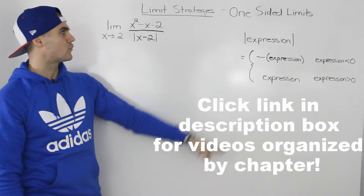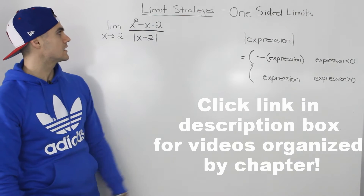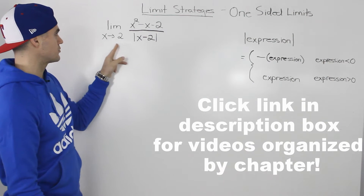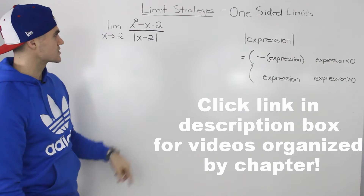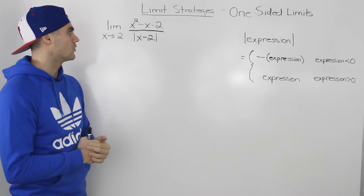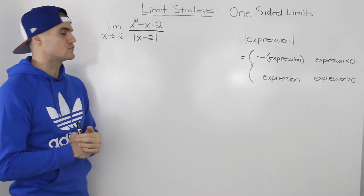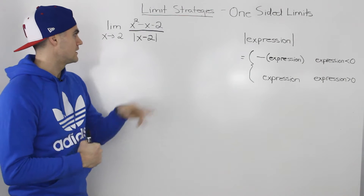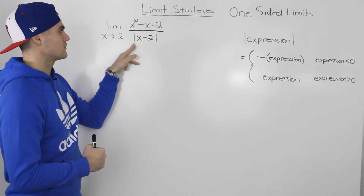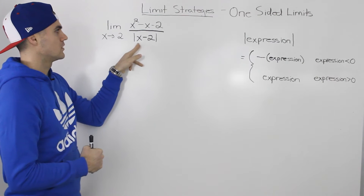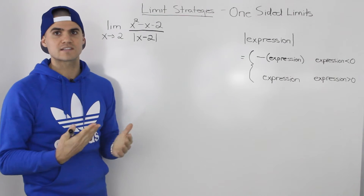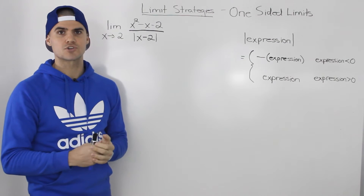Moving on to the next example for one-sided limits, we have the limit as x approaches two of x squared minus x minus two, all over the absolute value of x minus two. Because we have this absolute value function, we know that we're probably going to have to deal with a one-sided limit strategy.